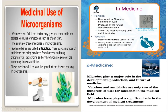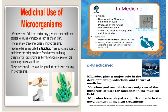In this slide we can see the medicinal use of microorganisms. Penicillin, discovered by Alexander Fleming in 1928, is produced by the fungus Penicillium notatum and is one of the most commonly used antibiotics today. Vaccines were discovered by Edward Jenner in 1796 and are usually made from weak or inactive versions of the microbes that make us ill.